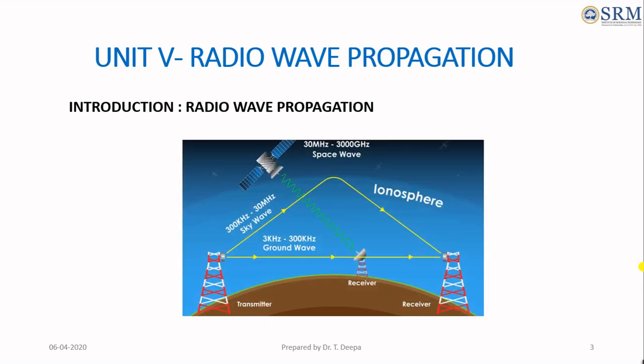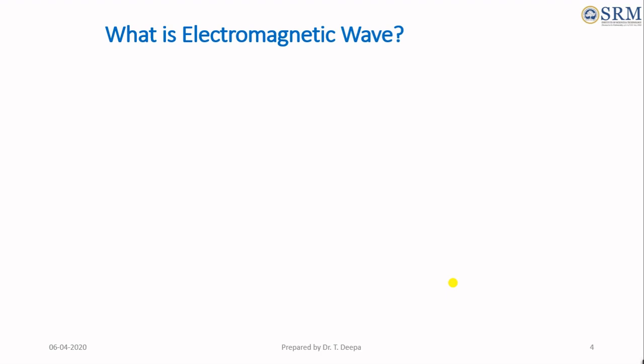Introduction to Radio Wave Propagation. In radio wave communication systems, an antenna at the transmitter radiates electromagnetic waves which travel through space and reach the receiving antenna at the other end. As the electromagnetic waves travel away from the transmitter, the strength of the wave keeps on decreasing. It is important to understand the composition of the Earth's atmosphere as it plays a vital role in the propagation of electromagnetic waves.